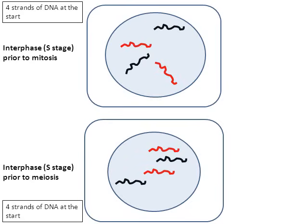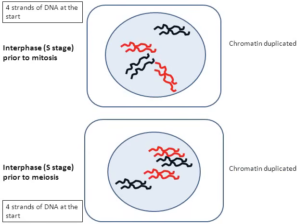Now that we're going to go through this process, what happens during the S stage of interphase — the DNA just duplicated. The chromatin strands duplicated, and that happens in the S stage of interphase, which is prior to mitosis. In the cell on the bottom, the same thing: the cell is going to duplicate the strands of DNA during the S stage of interphase, which is prior to meiosis. So far, the two cells are setting up to be fairly similar to one another.